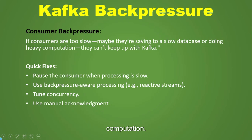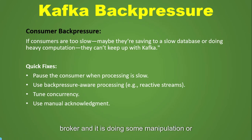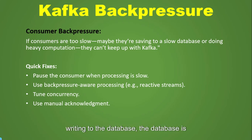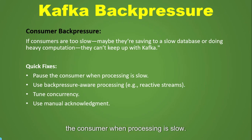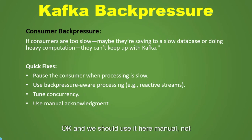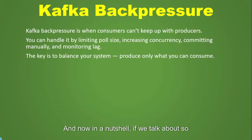The third way is consumer backpressure. If consumers are too slow — maybe saving to a slow database or doing heavy computation — they can't keep up with Kafka. For example, the consumer reads a message, does transformation on it, and writes to a database; heavy computation combined with a slow database causes this problem. Quick fixes: pause the consumer when processing is slow, use backpressure-aware processing such as reactive streams, tune concurrency, and use manual acknowledgement.